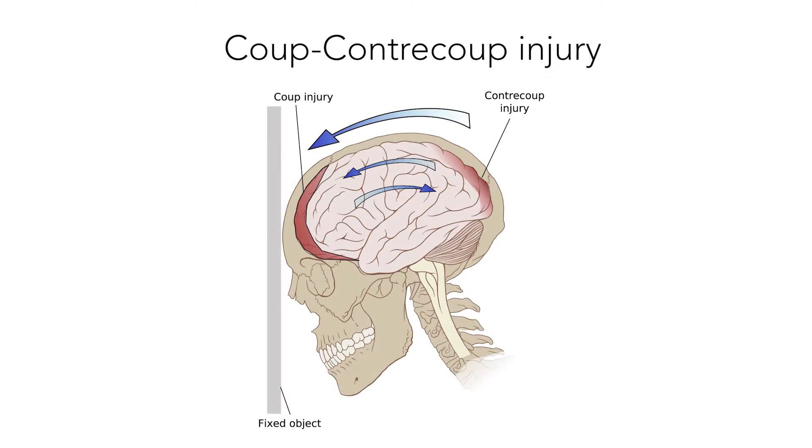This image demonstrates a closed head injury through direct contact and also represents a particular type of injury commonly referred to as a coup-contrecoup injury. A coup-contrecoup injury refers to the initial side of impact, or the coup, and the reaction to that, the contrecoup, resulting in injury to the direct opposite side of the initial injury. Think Newton's third law: for every action there is an equal and opposite reaction.